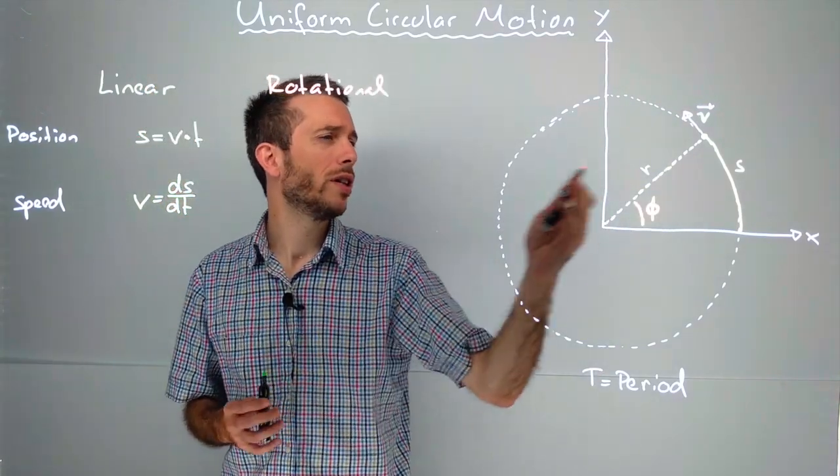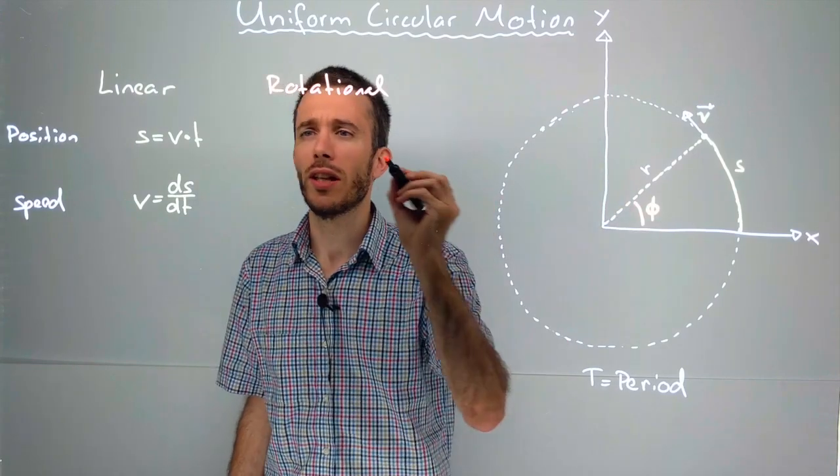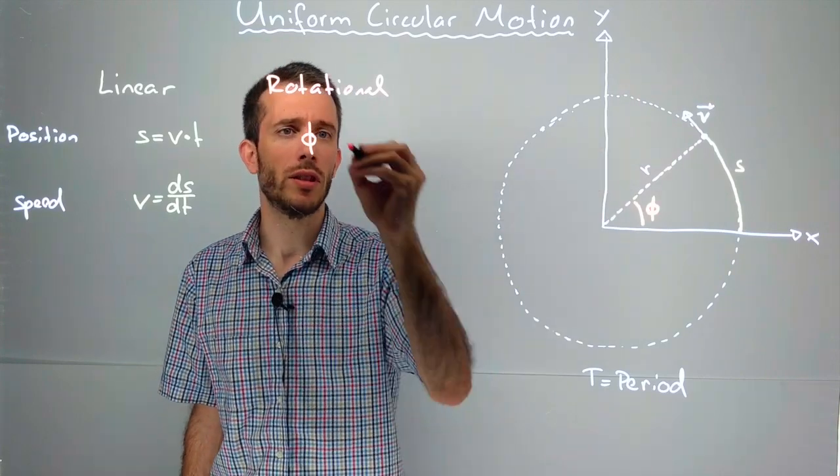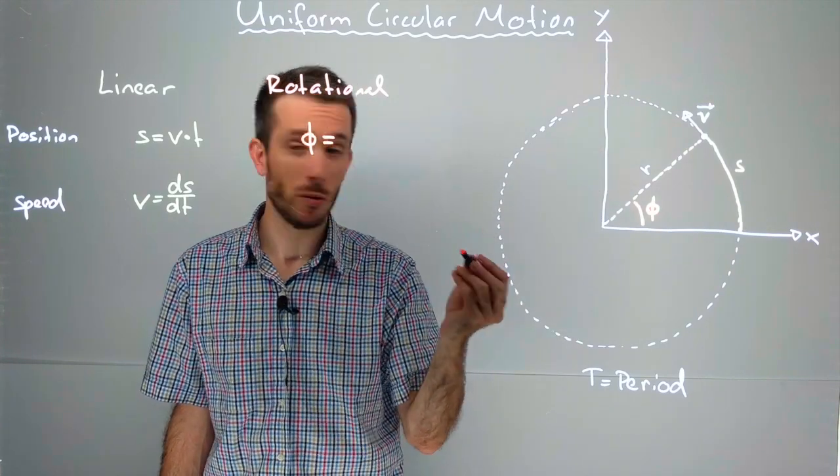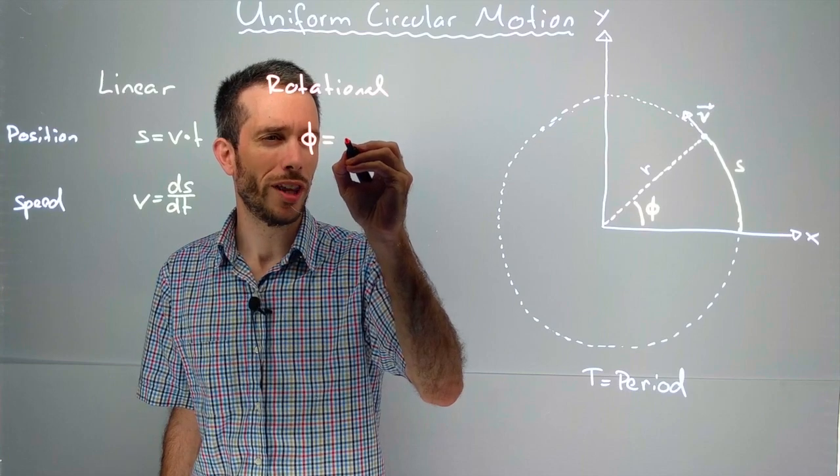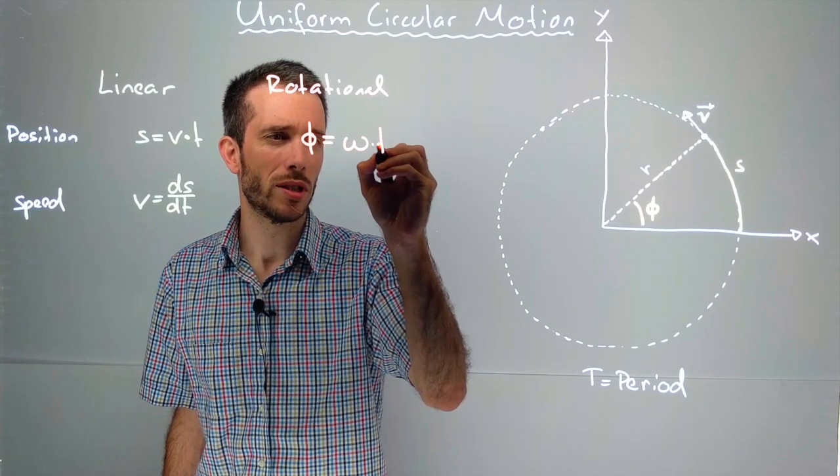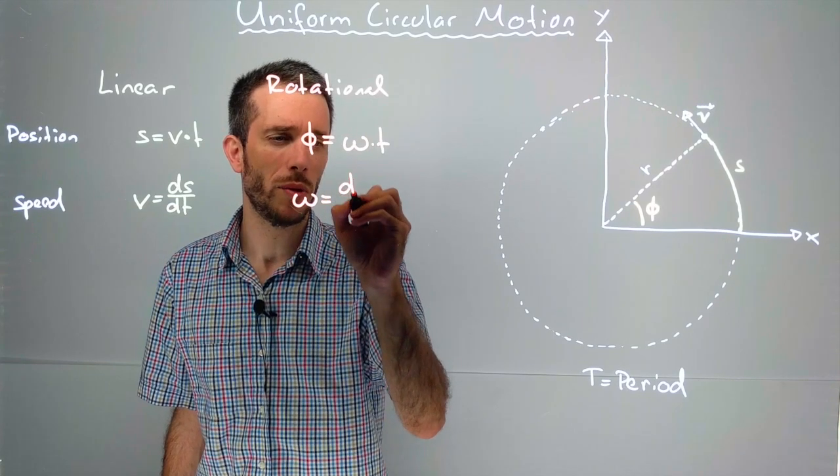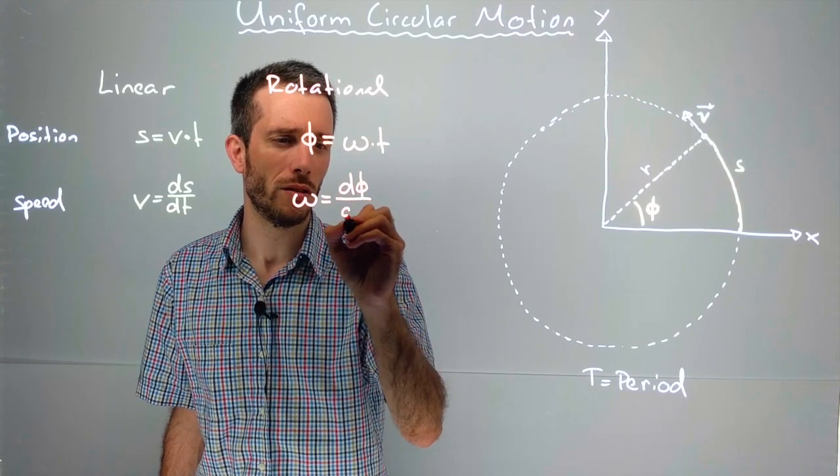We can also give it as a rotational entity with the angle along the circle, which should be equal to the rotation omega times the time. Omega being the derivation of the angle with respect to time.